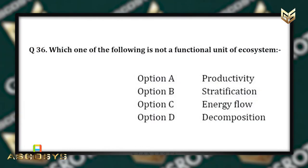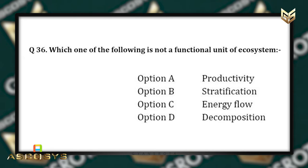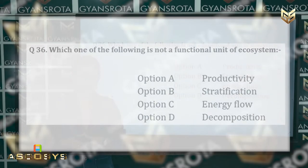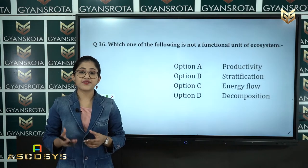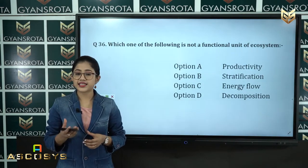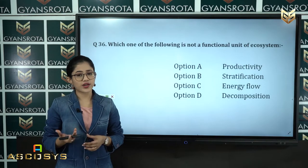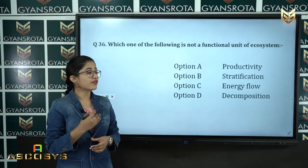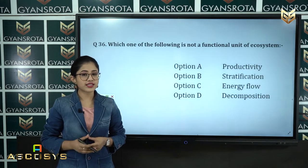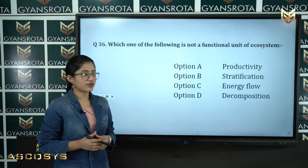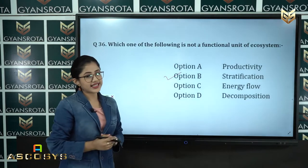Question 36: Which one of the following is not a functional unit of ecosystem? Option A: Productivity, option B: Stratification, option C: Energy flow, option D: Decomposition. This comes directly from the NCERT textbook chapter on Ecosystem. The correct answer is option B, Stratification.